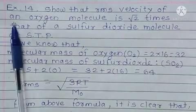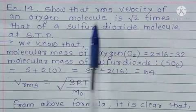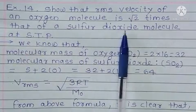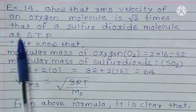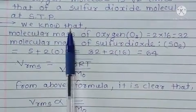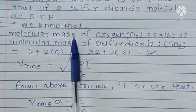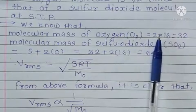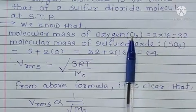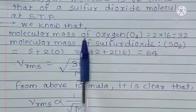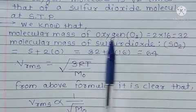Show that RMS Velocity of an Oxygen Molecule is root 2 times that of a Sulphur Dioxide Molecule at STP. We know that Molecular Mass of Oxygen O2 equals 2 into 16, that is 32.